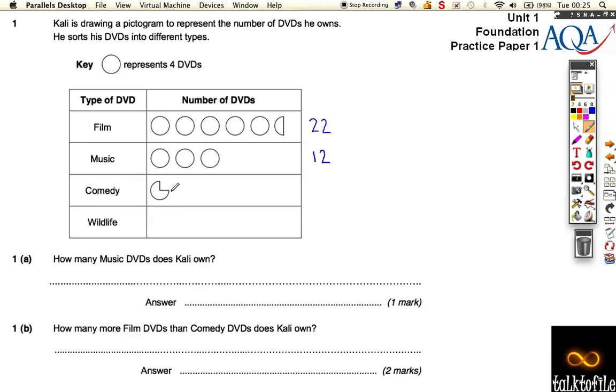So this one's a bit weird, it's not Pac-Man, although it does look a bit like Pac-Man. This represents three quarters, so if this whole circle's four, that's obviously missing one bit so that's worth three. But we don't know how much wildlife is yet. This question says, how many music DVDs does Kali own? Well, that's easy, we can see that straight away, the answer is twelve. So that's our mark.